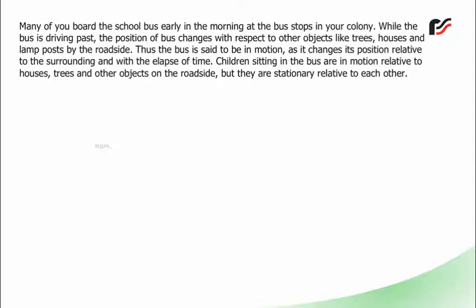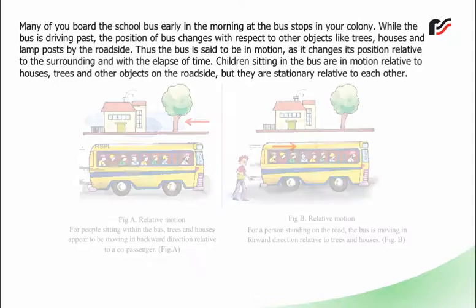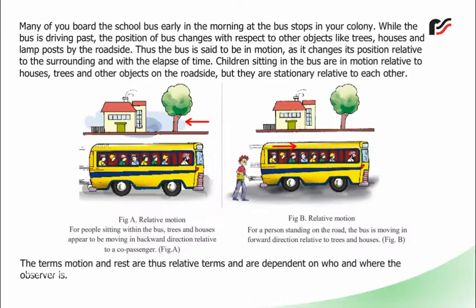Children sitting in the bus are in motion relative to houses, trees and other objects on the roadside, but they are stationary relative to each other. The terms motion and rest are thus relative terms and are dependent on who and where the observer is.